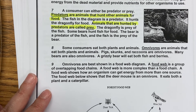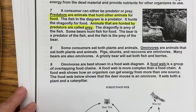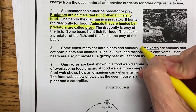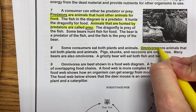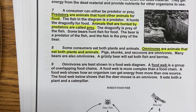Paragraph eight: Some consumers eat both plants and animals. Omnivores are animals that eat both plants and animals. Pigs, skunks, and raccoons are omnivores. Many bears are also omnivores. A grizzly bear will eat both fish and berries. So in this paragraph we got the word omnivore — they eat plants and animals.